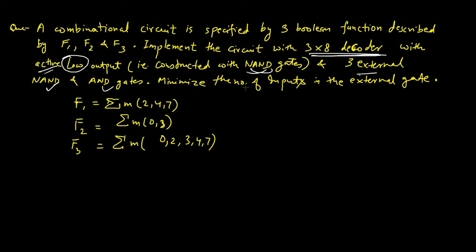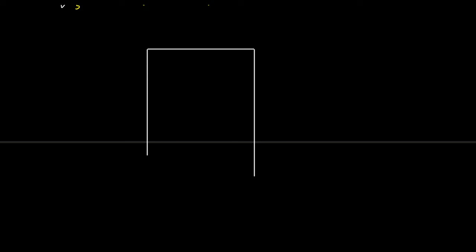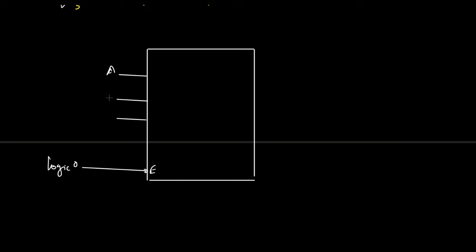We minimize the number of inputs in the external circuit. We draw a 3-to-8 decoder with enable connected to logic 0 and inputs A, B, C. The outputs are 0 through 7.